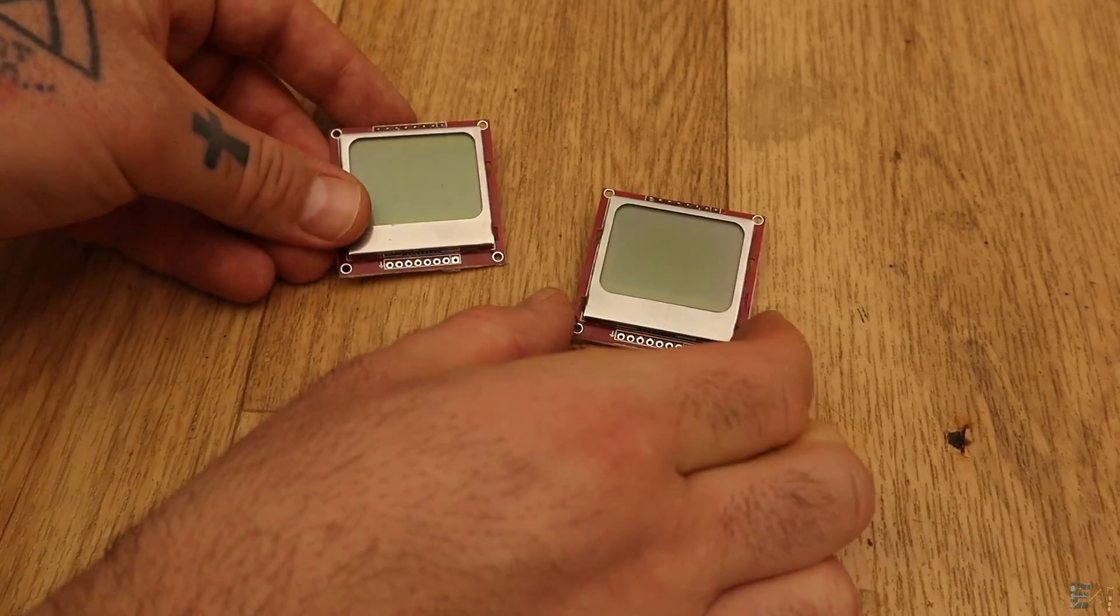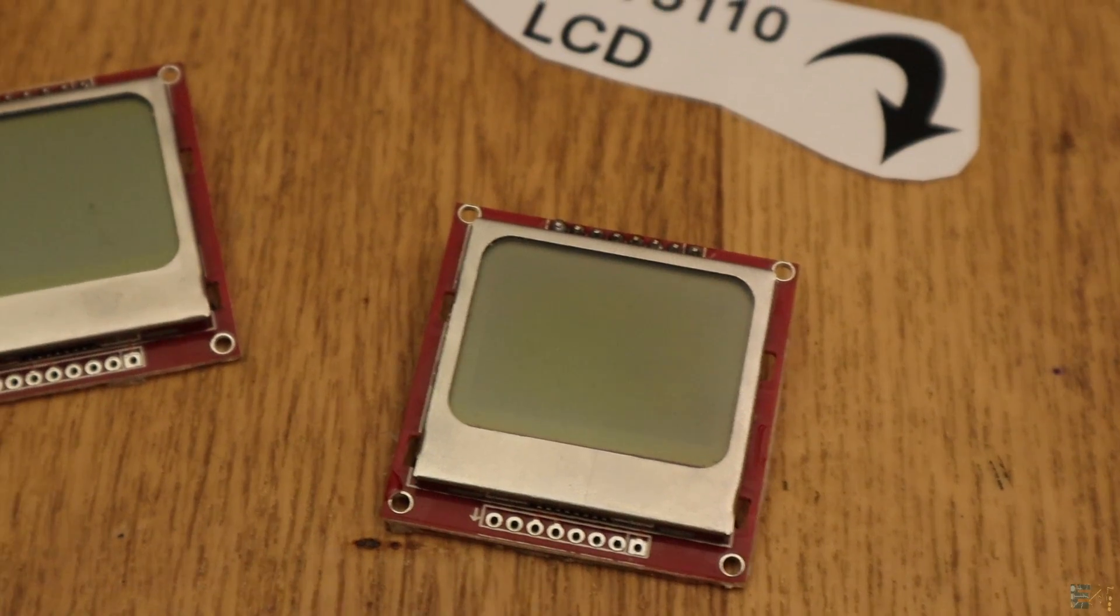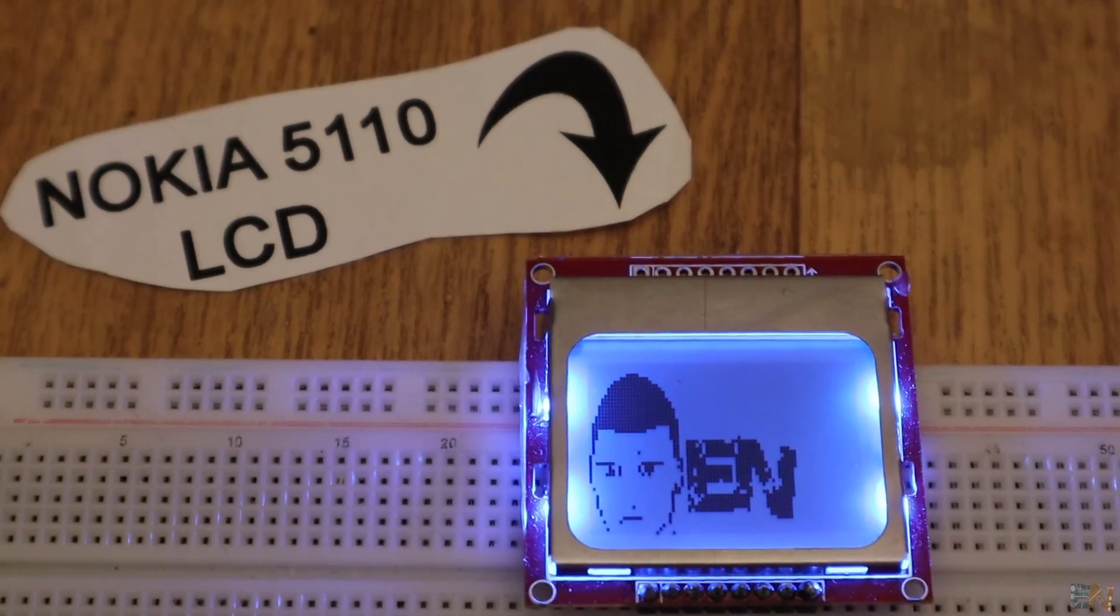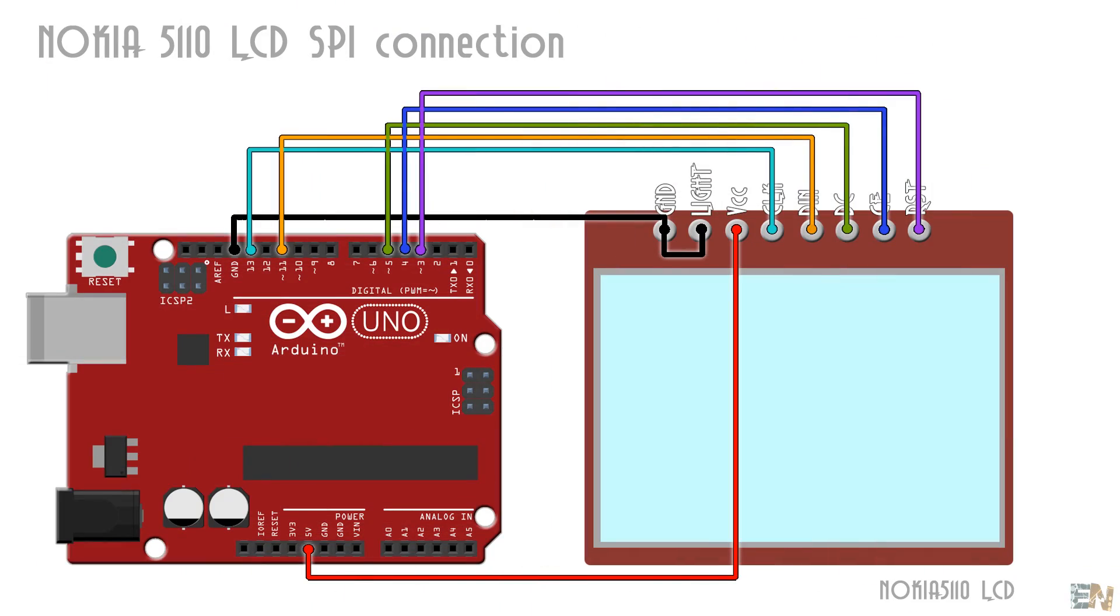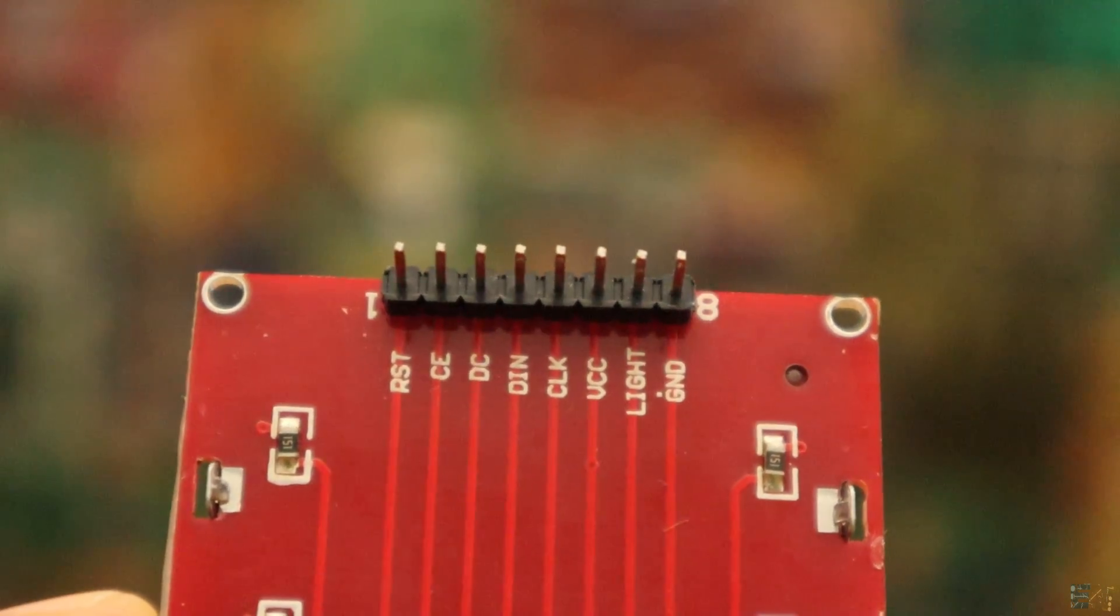Ok, another very common LCD is this Nokia 5110 LCD module that costs a few dollars. These ones have a different design and a blue-black light. So, make these connections from the Arduino to the screen. This display also uses an SPI communication.